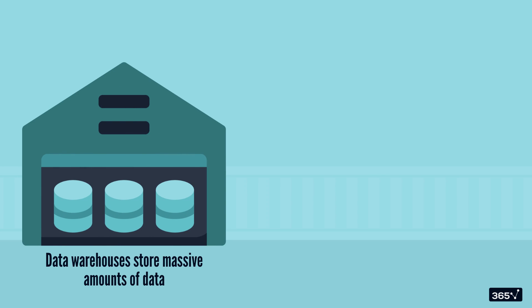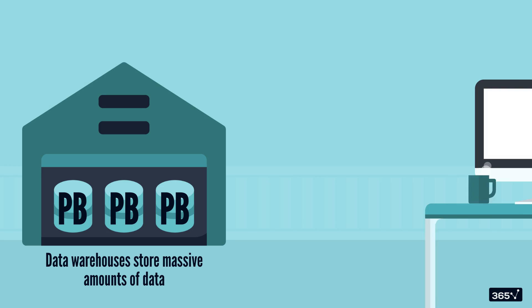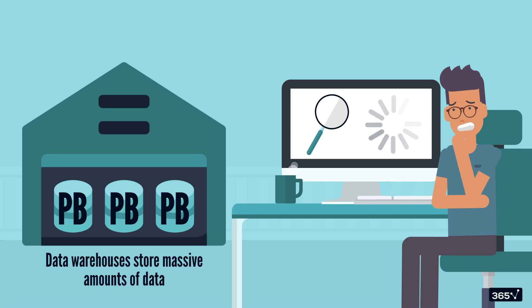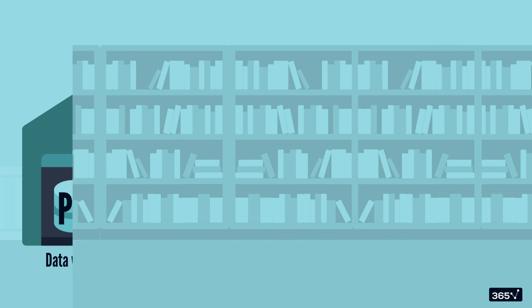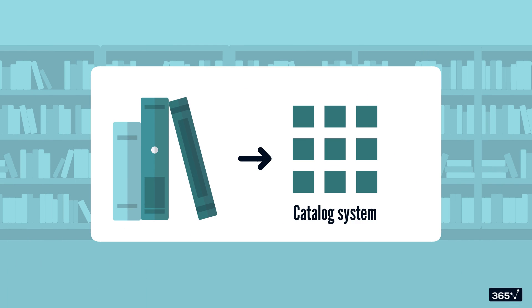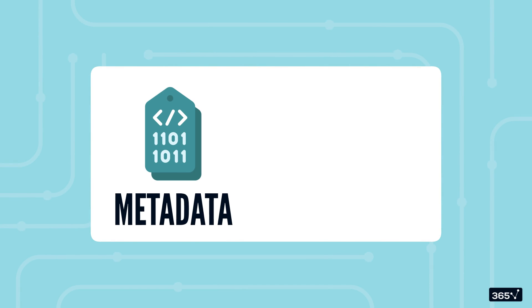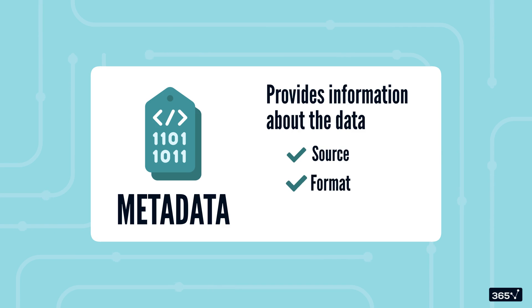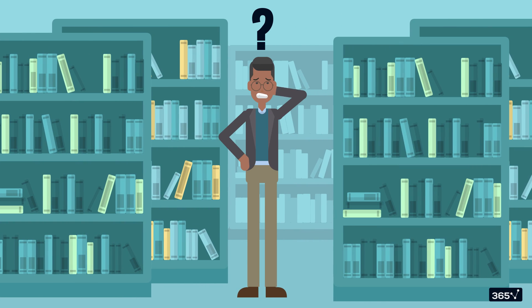Now, since data warehouses store massive amounts of data, sometimes in the petabyte scale, it's often hard to find key pieces of information quickly. To ease the process of finding the right information faster, data warehouses use metadata. Ever noticed how library books have a catalog system? Metadata plays a similar role in a data warehouse, providing information about the data, like its source, format, and when it was last updated. Without metadata, navigating a data warehouse would be like searching for a book in an unorganized library without any labels.